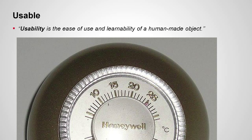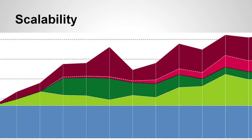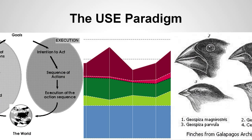We're going to talk about the difference between a usable system, systems about scalability, and systems that can evolve over time. They're all very, very important, and there are some particular techniques you can use to achieve these things.